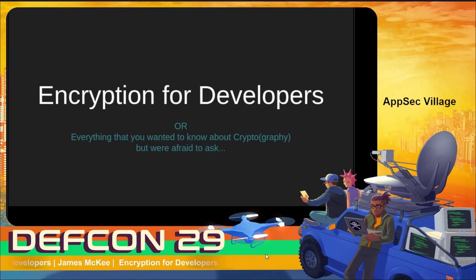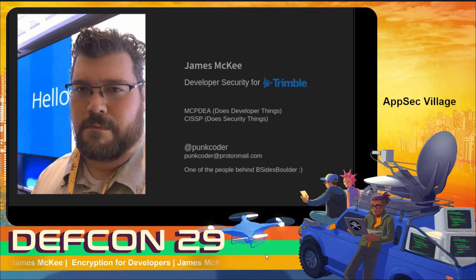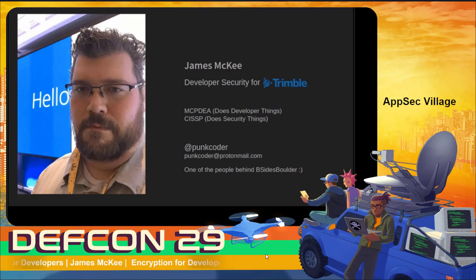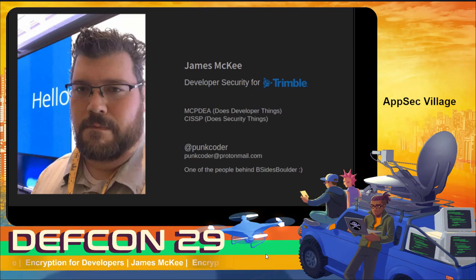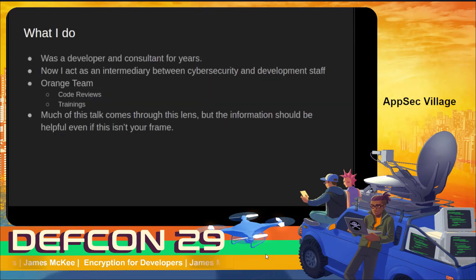Hello and welcome to Encryption for Developers — everything that you want to know about crypto but were afraid to ask. My name is James McKee. I do developer security at Trimble. I have some certs in the development space and some in the security space, which puts me in a pretty interesting place. You can find me on the internet at punkcoder, or reach me at punkcoder@protonmail.com. I'm also one of the people behind B-Sides Boulder, so you should check that out too.